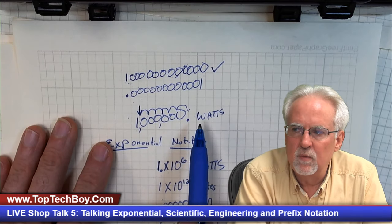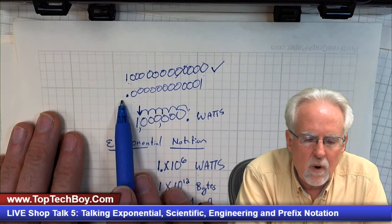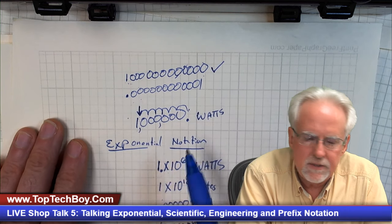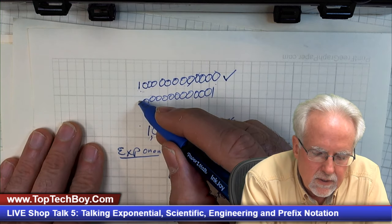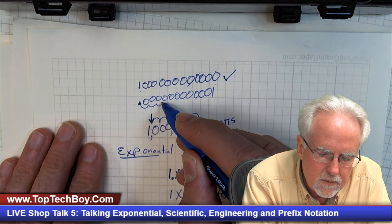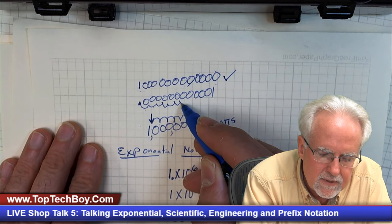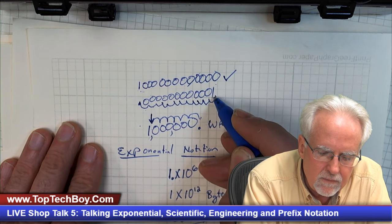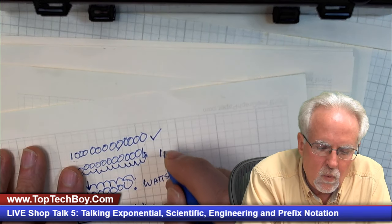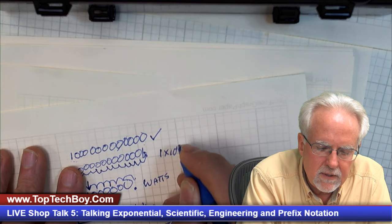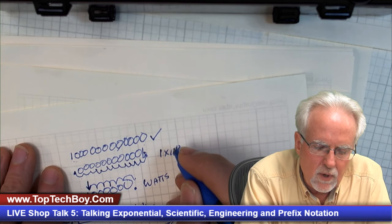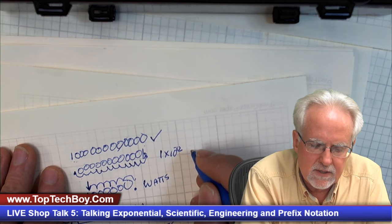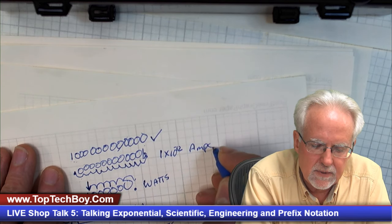Wherever you are, you move the decimal point to the right of the first number. For the picoamp — 0.000000000001 — you move it twelve places, and since we're moving it to the right, it is negative twelve. So one times ten to the minus twelve, and this was amps.